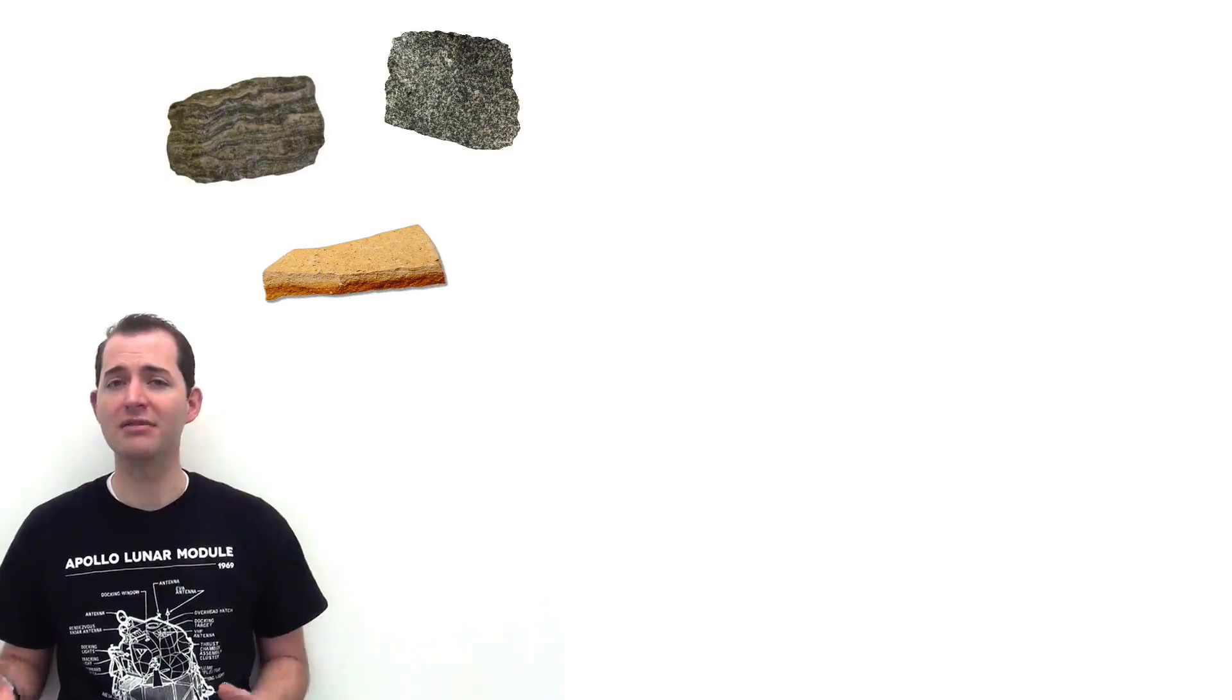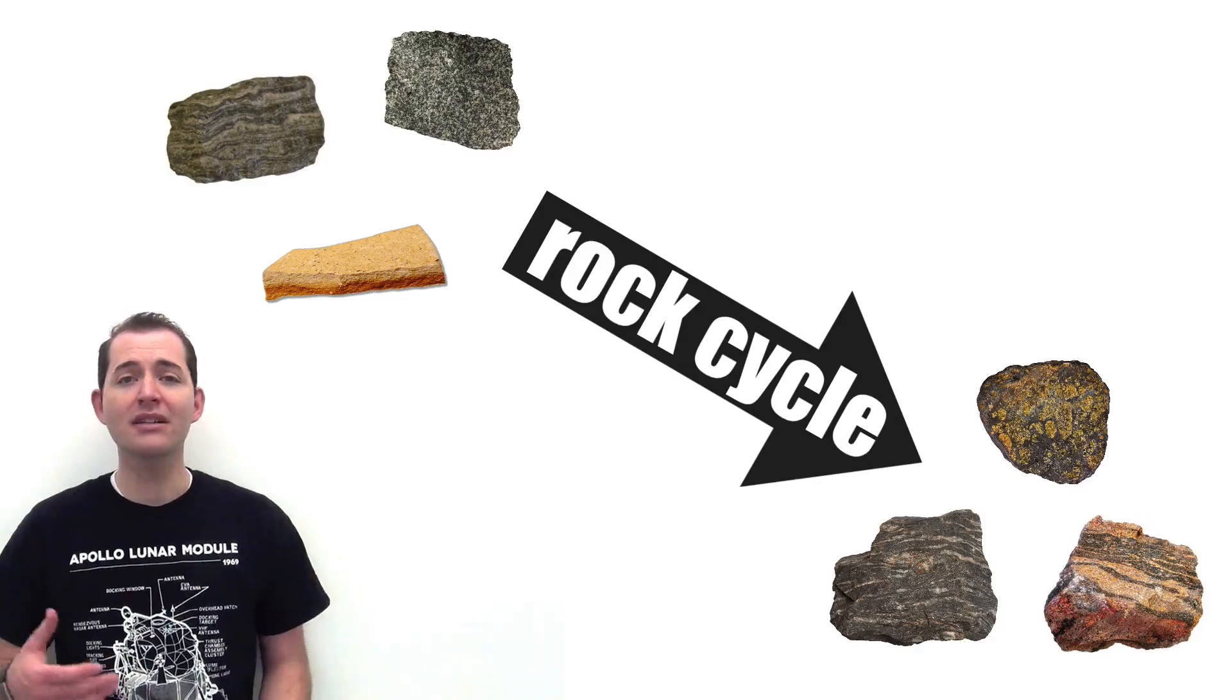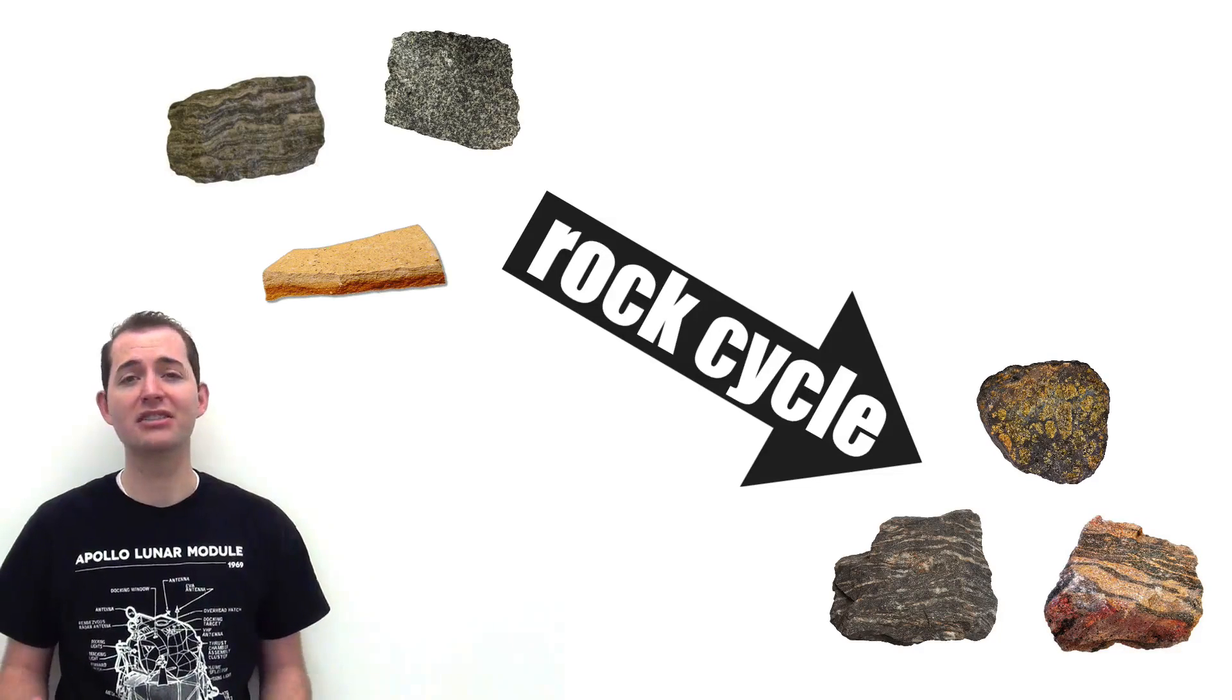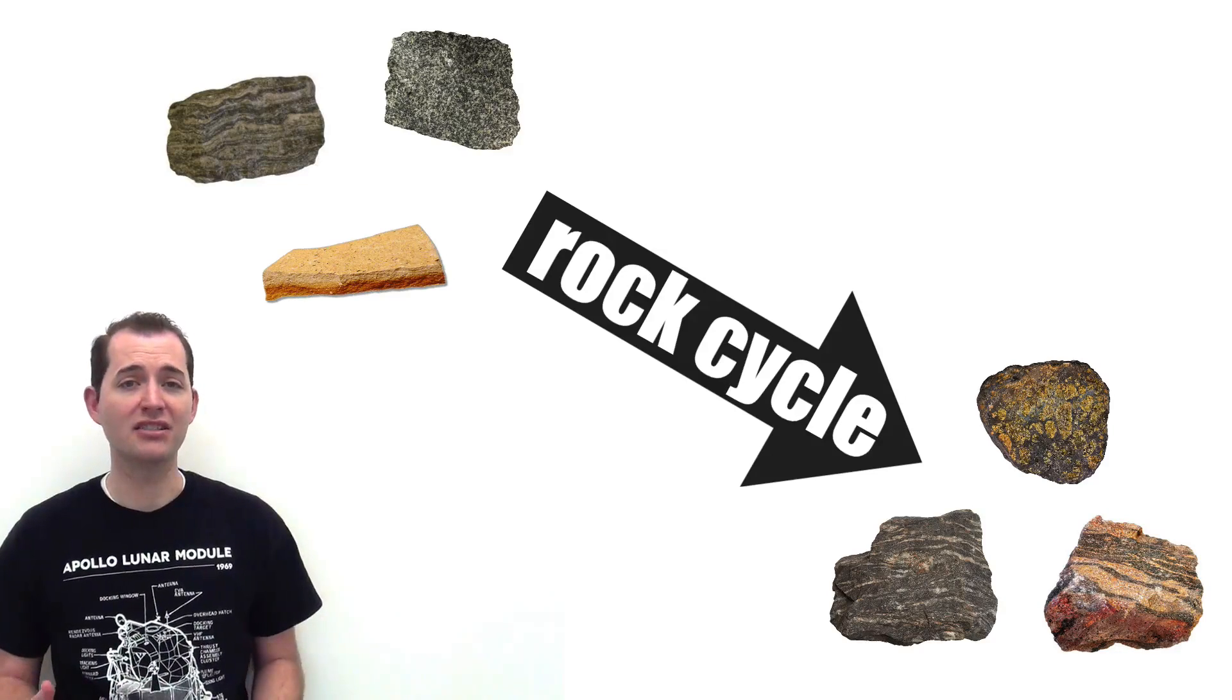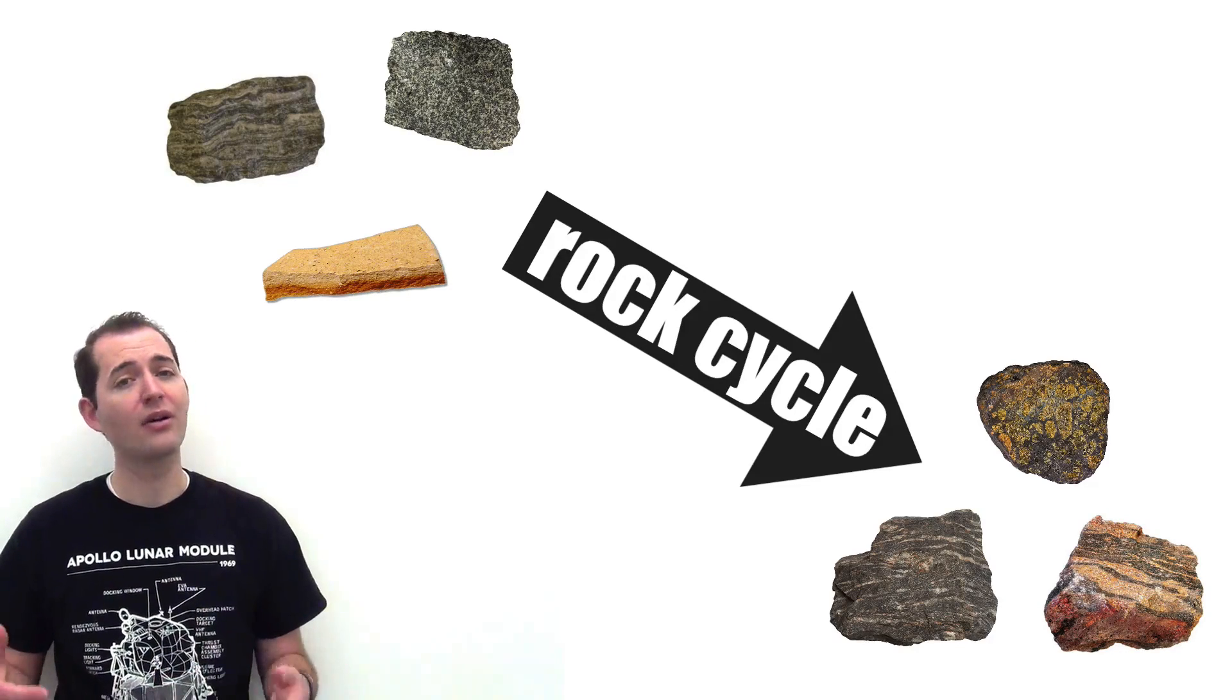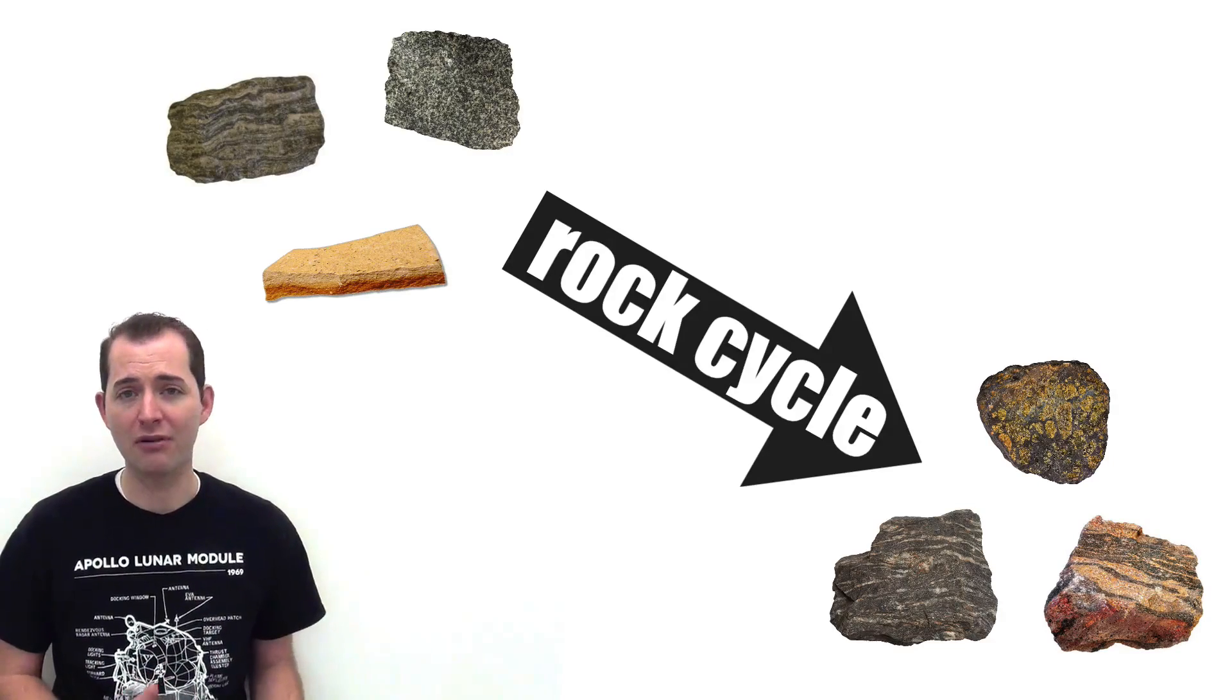The Rock Cycle is a group of changes that cause rock types to be changed into other types of rocks. For example, sedimentary rocks can be changed into igneous rocks, or metamorphic rocks can be changed into sedimentary rocks, or even metamorphic rocks can be changed into other types of metamorphic rocks.